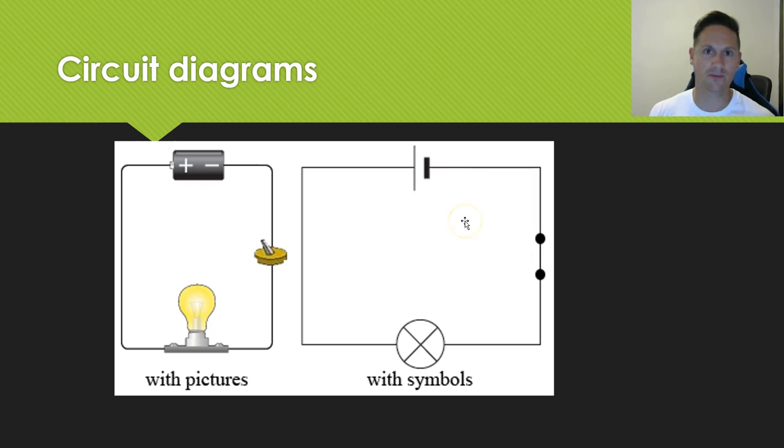Now here's our circuit diagram with symbols. So you can see a few differences here. First of all, the battery is now represented by two lines. One long, that's the positive end, and a short, fatter one, that's the negative end.